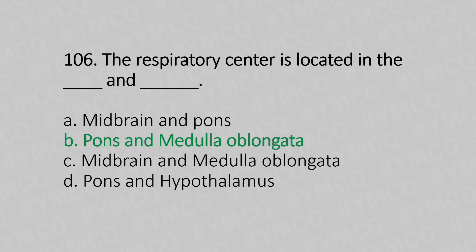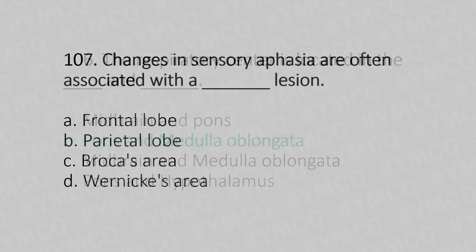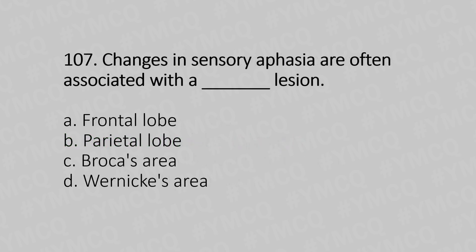Question number 107: Changes in sensory aphasia are often associated with a dash lesion. Option A: frontal lobe, Option B: parietal lobe, Option C: Broca's area, Option D: Wernicke's area. The answer is Option D, Wernicke's area.